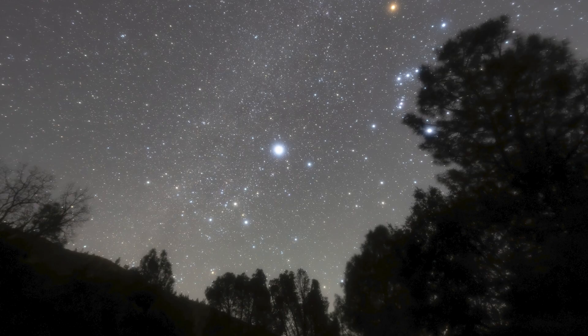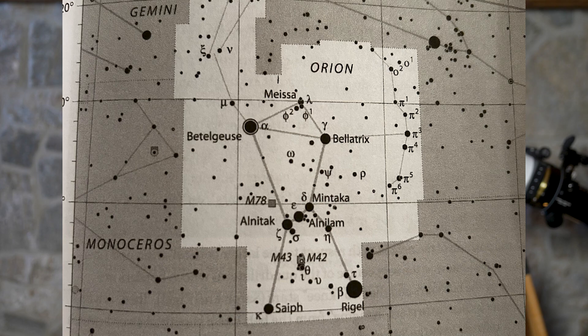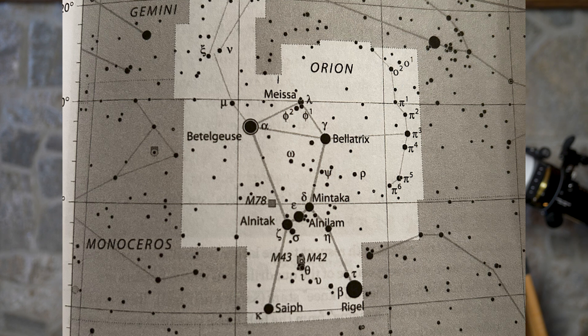Sirius is unmistakable — it's very bright, and when it's low on the horizon, it twinkles significantly. If you go back to Orion's belt and draw a line upwards, you'll come to another bright star that is kind of reddish, and that is Aldebaran. It's 20 degrees away, and it's the eye of the bull in Taurus.